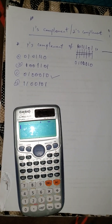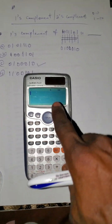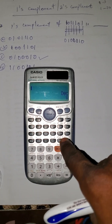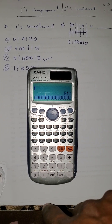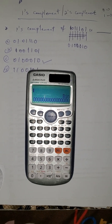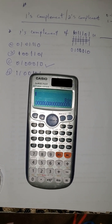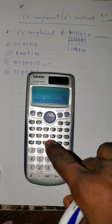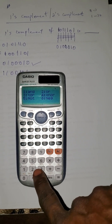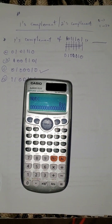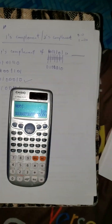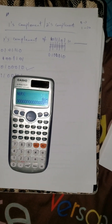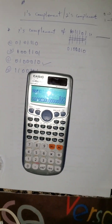If you check the options, the answer is option C. But if you want to use your calculator, press mode, select binary, then press binary input. Press shift, then press NOT — that's the function you use for one's complement. The reason to use the calculator is that they may ask you to find the one's complement of a binary number that's part of an addition.